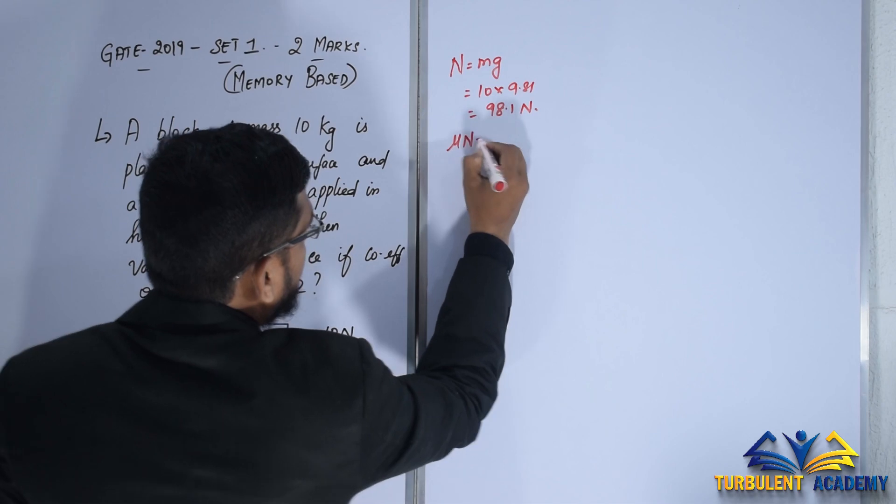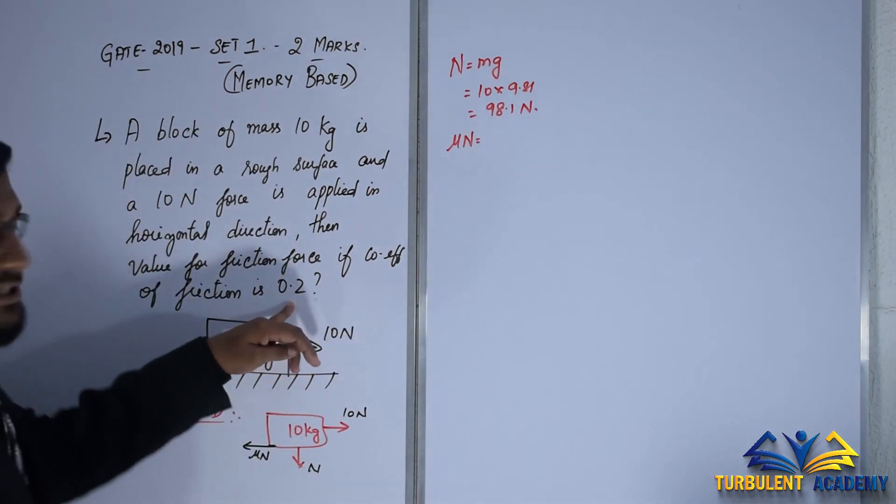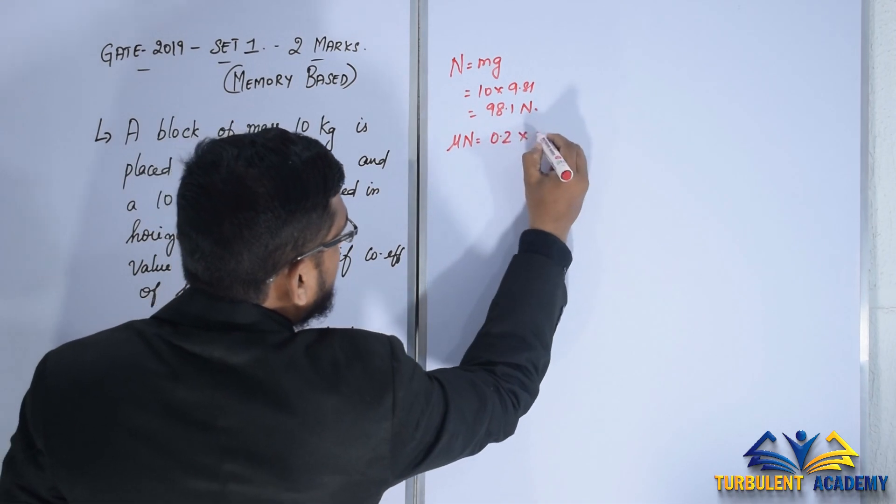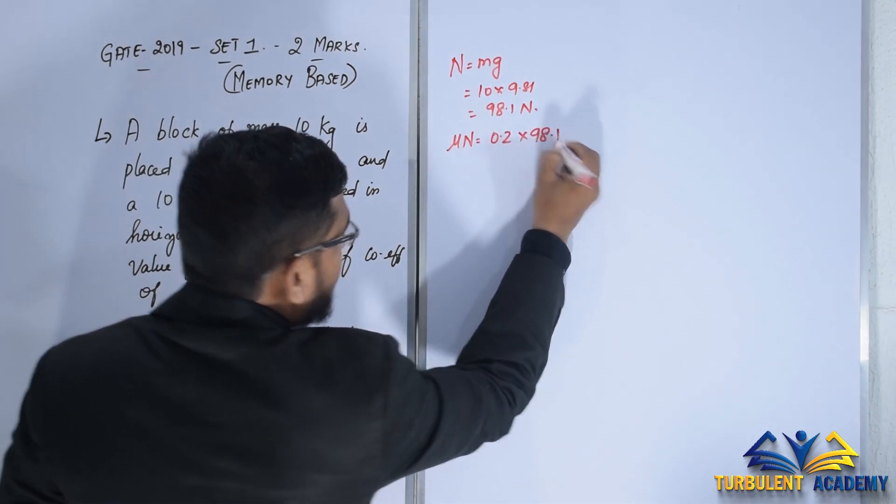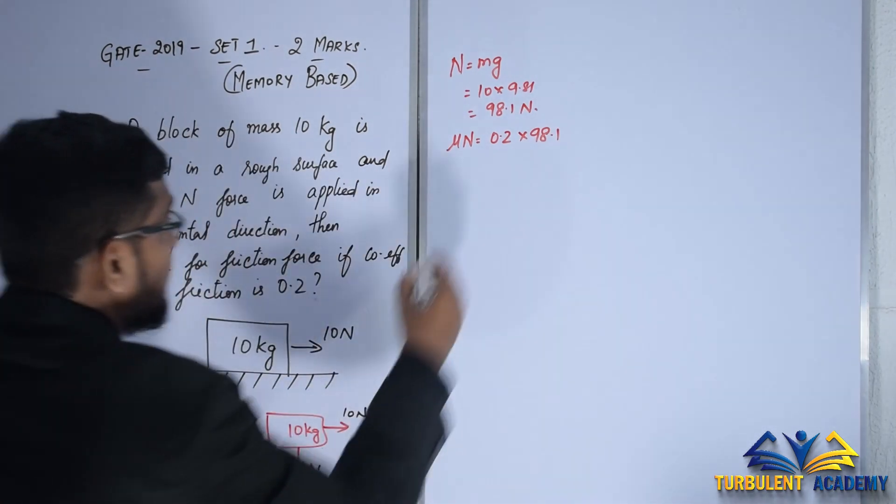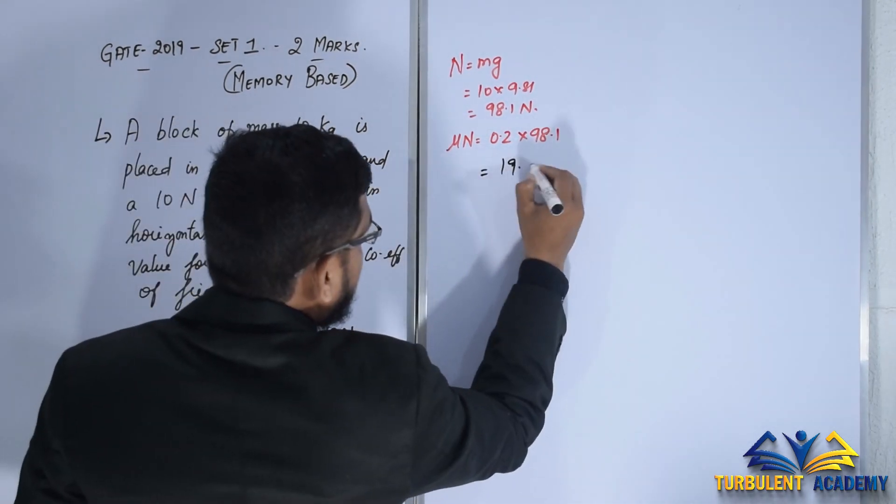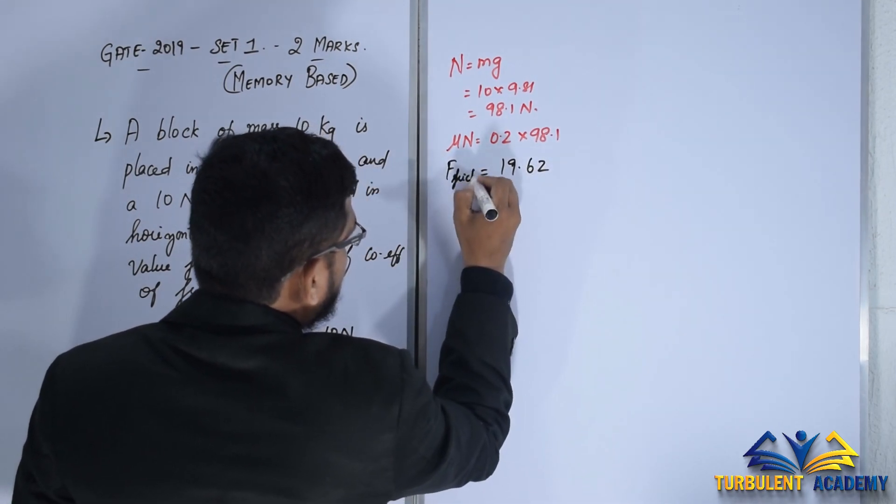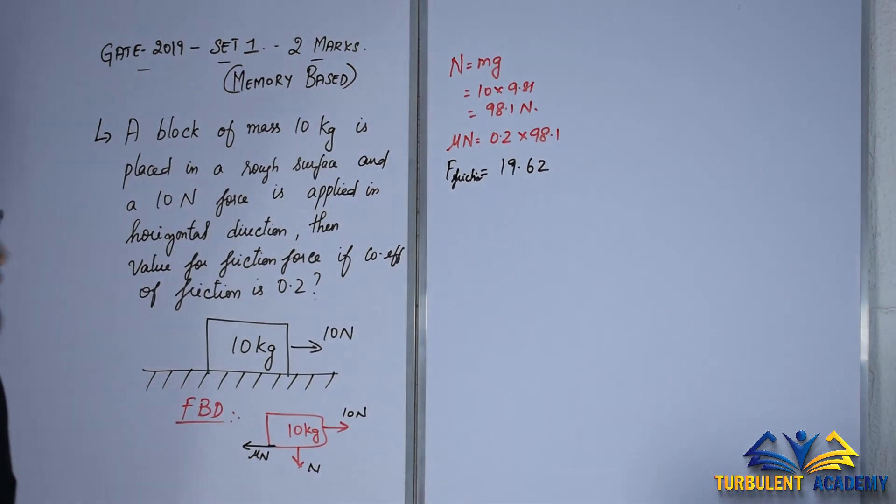Our mu N would be: mu is the coefficient of friction, 0.2, so 0.2 into 98.1. So it will give me 0.2 into 9.81, which gives me 19.62 friction force. Do you think this is the answer? Obviously no, because this is the force which is required to move the mass.